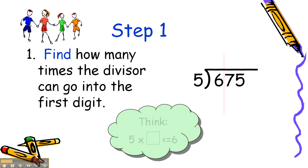Or you can think of it this way: 5 times what number equals or is less than 6? Well, obviously, the answer is 1. So we write 1 above the 6 in our quotient.